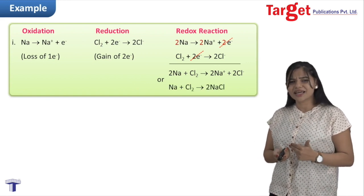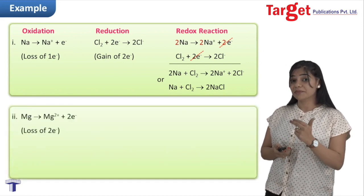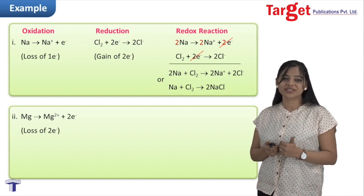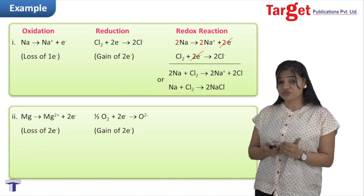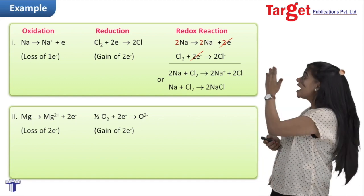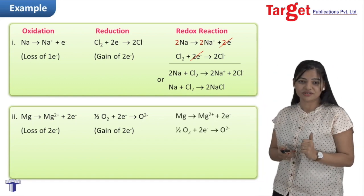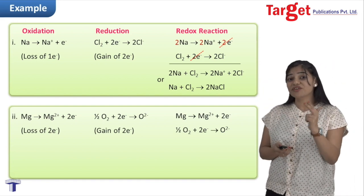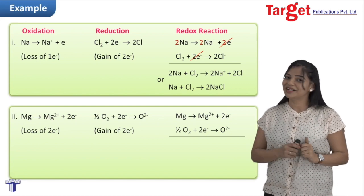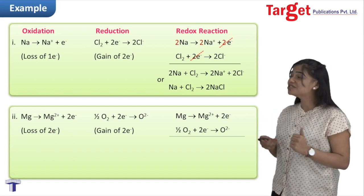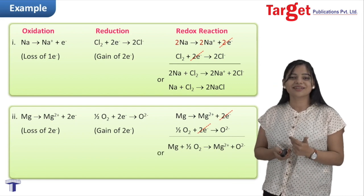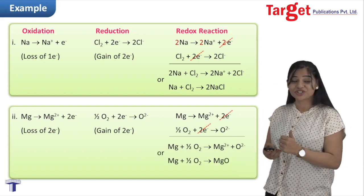Let's look at a second example using magnesium. Magnesium has the tendency to lose two electrons to complete its octet. Similarly, each oxygen atom has the tendency to gain two electrons. When we add both the oxidation and reduction reactions, the number of electrons lost equals the number gained, so we do not need to multiply by a common factor. Adding the two reactions gives us Mg + O₂ → Mg²⁺ + O²⁻, or simply MgO.